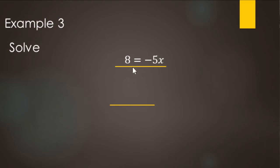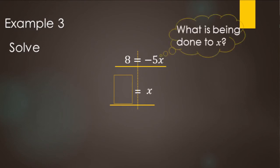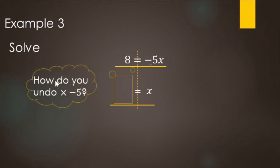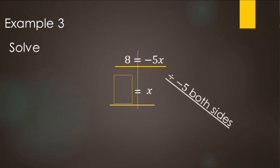We have 8 equals negative 5 times x, or negative 5x. We want x on the right-hand side at the bottom of our work. What's being done to x? It's being multiplied by negative 5. Division undoes multiplication, so we divide both sides by negative 5. Negative 5 divided by negative 5 cancels, leaving x. Then 8 divided by negative 5: a positive divided by a negative gives a negative. 5 doesn't divide into 8 evenly, so we leave it as a fraction. X equals negative 8 fifths.